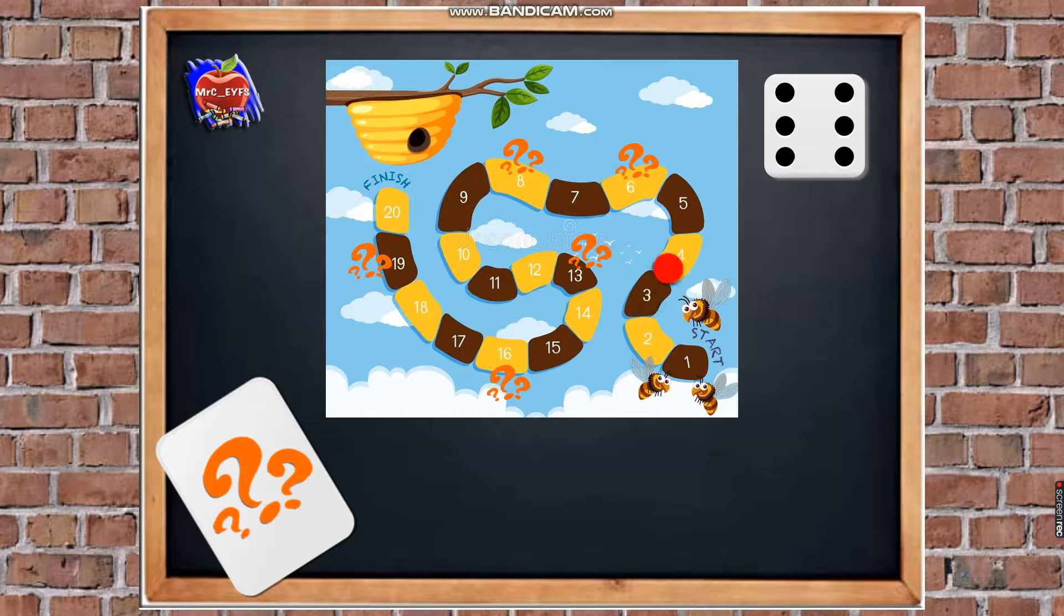1, 2, 3, 4, 5, 6. Oh, I've landed on a mystery card. So I have to turn over the mystery card, and we have to read what it says.